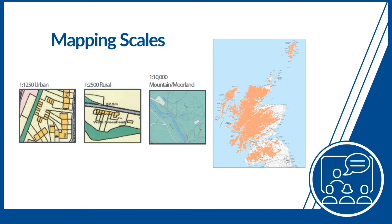1:10000 scale is called Mountain and Moorland. The majority of Scotland was originally mapped at this scale for obvious reasons — a lot of Scotland is Mountain and Moorland. The map of Scotland on the right-hand side of the slide shows that about 60% of Scotland was originally captured at this scale. This is now changing. The Ordnance Survey are constantly improving their mapping using modern technology and survey techniques to reduce the amount of 1:10,000 scale mapping. Most hamlets, houses and other notable buildings that were once mapped at that scale are now surveyed at 1:2500 specification, giving a far better map representation and improved accuracy and geometric fidelity.